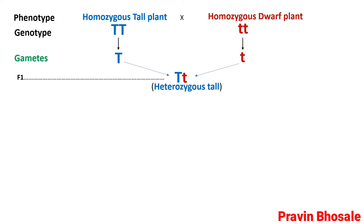The F1 plant will be heterozygous tall. You can see there are two alleles: allele for tallness (capital T) and allele for dwarfness (small t). But the plant is heterozygous tall, meaning the allele for tallness has expressed itself since it is a dominant character. The allele for dwarfness (small t) is recessive and gets suppressed in the presence of the dominant allele.